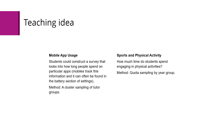You could also think about sports and physical activity — how much time do students spend engaging in physical activities? A method for this could be quota sampling, making sure you get a particular number of students from each year group. If you collect all of this data, you could then use another aspect of the course — correlation — to see if there's a connection between these bits of data.